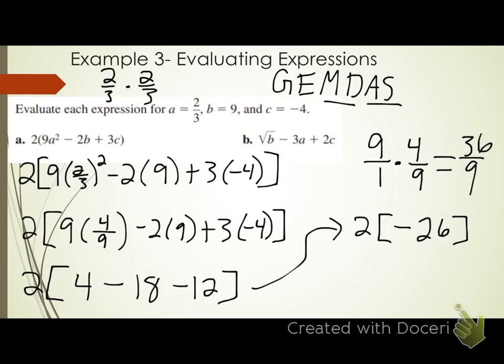Everything inside my brackets is simplified down to one number. Now I jump outside the brackets and start my order of operations over again. No grouping symbols, no exponents. I do have multiplication: 2 times negative 26 is negative 52. That's my final answer — the value of my expression when A is two-thirds, B is 9, and C is negative 4 is negative 52.